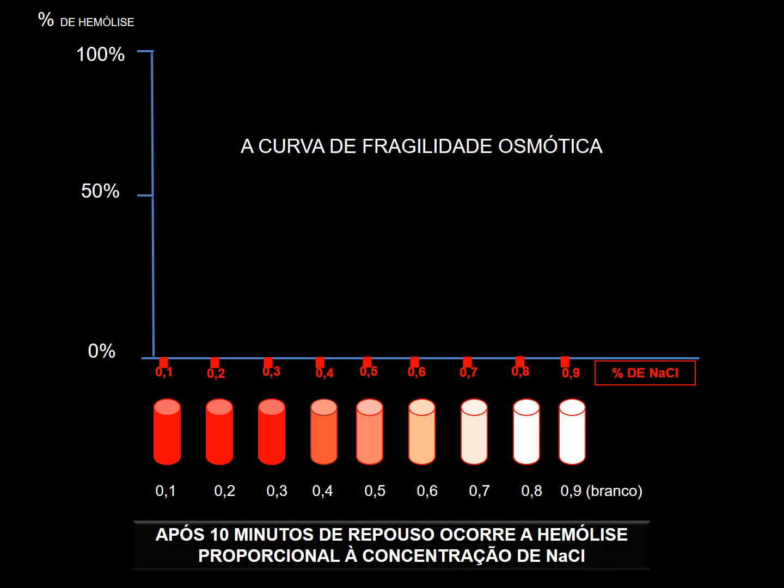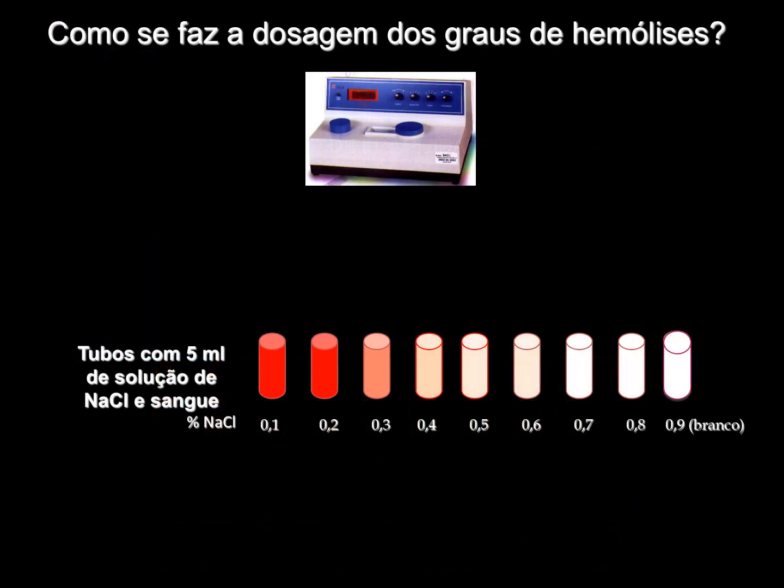O sobrenadante é transferido para tubos limpos: retira-se o sobrenadante do 01 e coloca-se num tubo identificado com 01, do 02 para outro tubo identificado com 02, do 03 para outro com 03, e assim por diante. Isso porque agora será feita a dosagem espectrofotométrica.